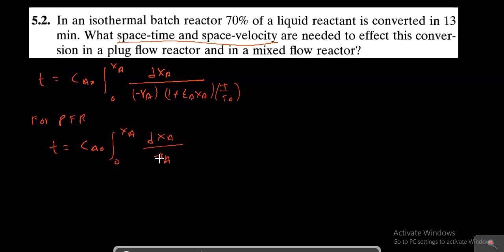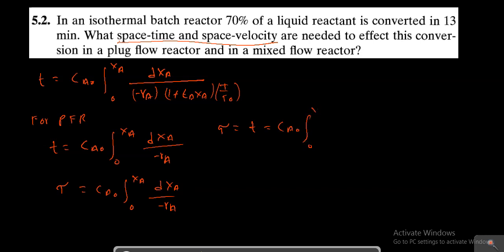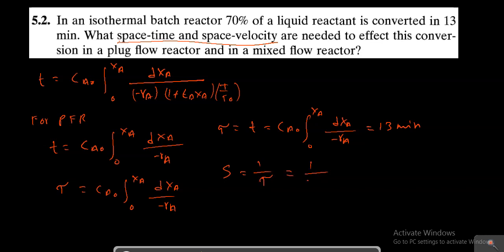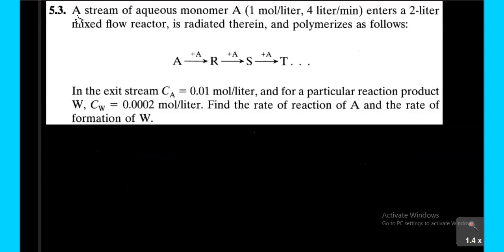Tau equals CA0 times the integral from 0 to XA of dXA divided by -rA. For a liquid reactant, tau equals T equals 13 minutes. Space velocity S equals 1 by tau, which equals 1/13 per minute. So the space time is 13 minutes and space velocity is 1/13 per minute.